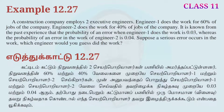A construction company employs two executive engineers. Engineer-1 does the work for 60% of the jobs, and Engineer-2 does the work for 40% of the jobs. The probability of an error when Engineer-1 does the work is 0.03, whereas the probability of an error in the work of Engineer-2 is 0.04. Suppose a serious error occurs in the work — which engineer would you guess did the work?